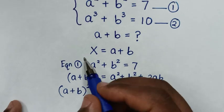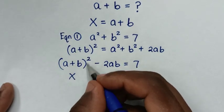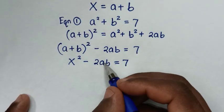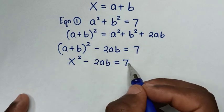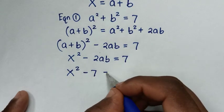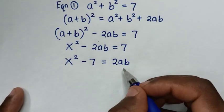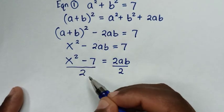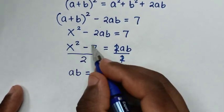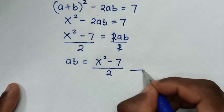Now, because we let x equal to a plus b, we substitute x in here. So it will be x squared minus 2ab is equal to 7. Then we make ab the subject: x squared minus 7 equals negative 2ab, so ab is equal to x squared minus 7 over 2. We call this equation 3.